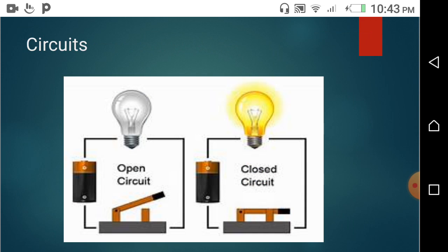The diagram shows a circuit that can be used to test whether a material is a conductor or an insulator. Electricity is provided by a cell battery and a switch controls the circuit.